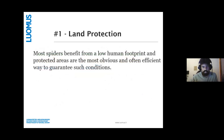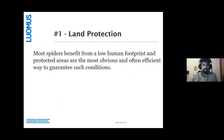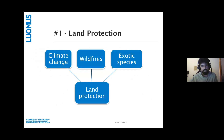For land protection: most spiders benefit from a low human footprint, so this one is fairly obvious. It is an efficient way to guarantee conditions for spider species, and a protected area can act as a kind of buffer for threats such as climate change, wildfires, and exotic species.